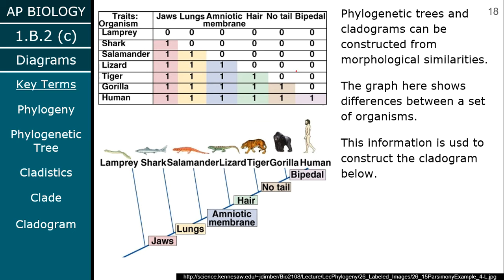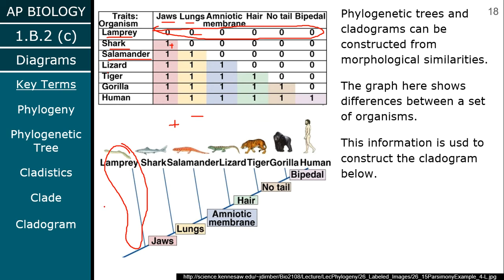The easiest way to make one of these trees is to create a matrix of traits. You put all your organisms in a column on the left, and along the top you write all the traits — jaws, lungs, all the things that differ from one another. You put either a zero or a one: zero means they don't have it, one means they do. You could also use pluses and minuses. This allows you to figure out how many traits each organism has. According to this chart, lamprey should have none of these six traits, so we put lamprey as the outgroup.